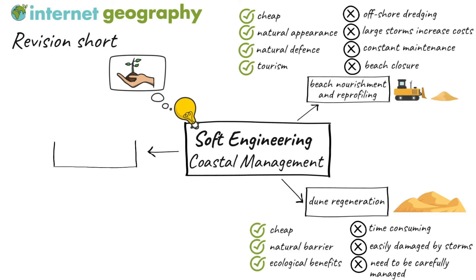Coastal realignment, or managed retreat, is a form of soft engineering that involves creating a new position for the coastline through engineering. In the case of managing coastal flooding, this means moving the boundary inland. When deciding whether to introduce managed retreat to an area, a cost-benefit analysis is conducted. If the benefits outweigh the costs, then it is more likely to go ahead, with landowners being compensated. Often low earth embankments are constructed inland to protect higher-value land, property, or roads. Old sea defences are deliberately breached to allow seawater to encroach the land.